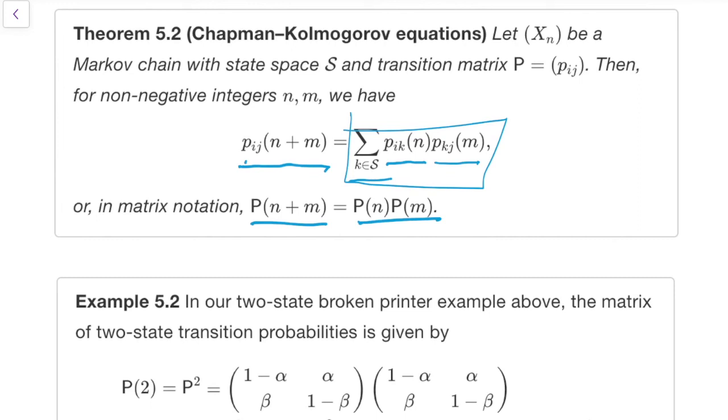Obviously, once we know that n-step transition matrices can be written as powers, this statement here is obvious. Because the left-hand side is P to the n plus m, and the right-hand side is P to the n times P to the m. But we know that because of the rules of powers, that's P to the n plus m. So both sides are equal.